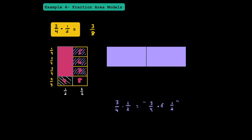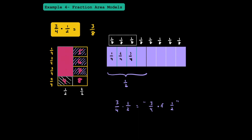In math, 'of' means multiplication. If this part of the fraction represents 1 half, and we split it into fourths to get 1 fourth, 2 fourths, and 3 fourths, then this 3 fourths really represents 3 eighths out of the entire initial whole. Half of 3 fourths is 3 eighths, and 3 fourths of 1 half is also just 3 eighths.